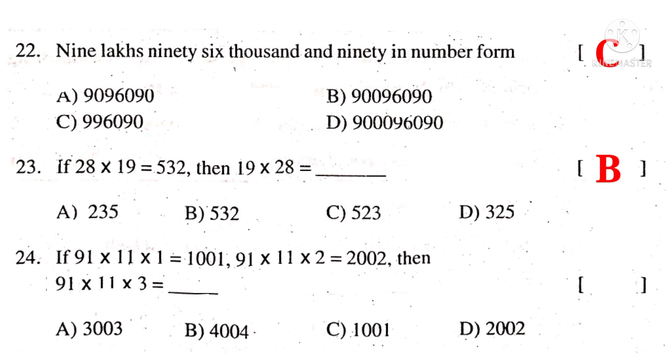24. If 91 into 11 into 1 is 1001, then 91 into 11 into 7 into 3 is equal to 11 multiplied by 3, that is 3003. So the correct choice is A.